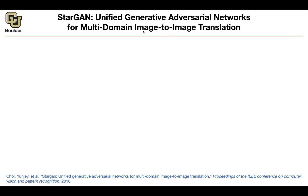In cycle-consistent GAN, you are doing image-to-image translation, but you didn't have pairs of data — pairs of input-output data. You just have two sets of images from one style and another style, and then you wanted to translate from one style to the other.